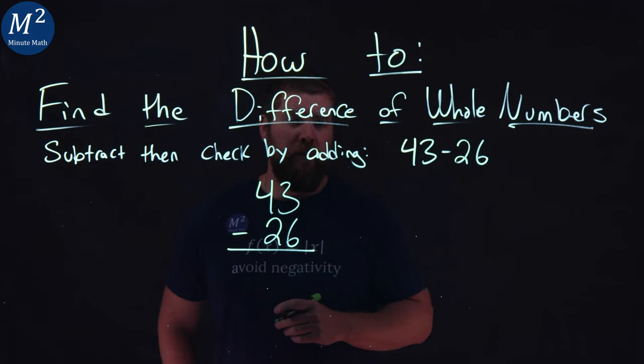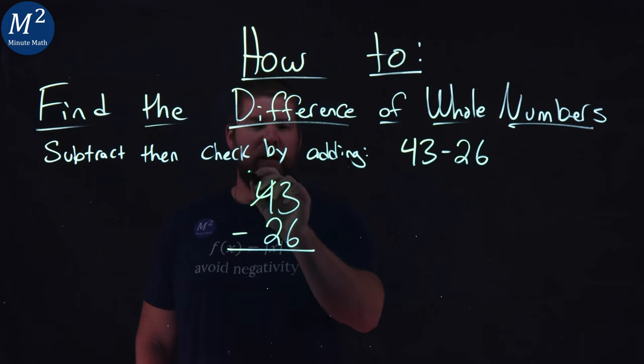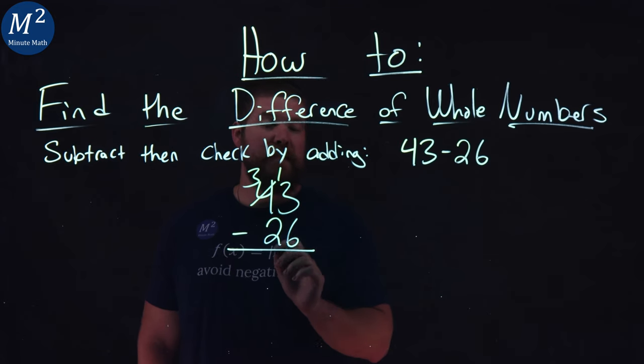So I'm going to look to the 4. I'm going to take 10 from that 4, so that 4 becomes a 3, and then I'm going to take that 10 value, put it here to add to the 3, which makes it a 13.